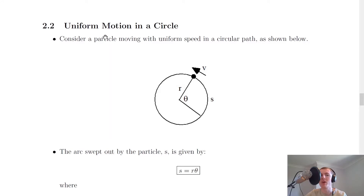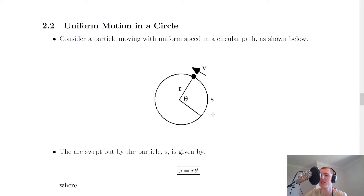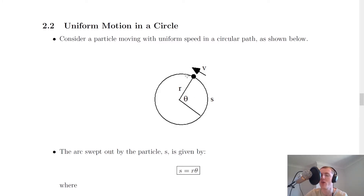Consider a particle moving with uniform speed in a circular path as shown below. It's a constant speed, and we've got a particle moving with speed v. Notice that it's actually sweeping out a displacement s, or what we call an arc. The particle has travelled from this point here round to this point here, sweeping out a displacement s. We can label the radius of the circular path and also the angle theta that it has swept out.